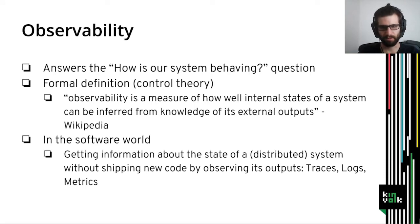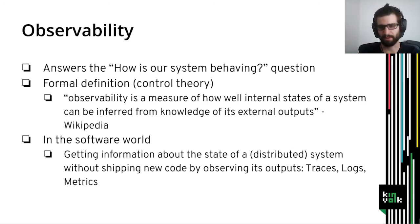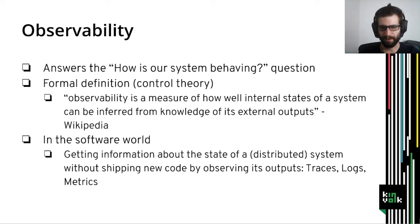This definition could be not that relevant for software. So we could say that for the software world, observability is about getting information about the state of the system without having to ship new code to the system, without changing the code of the system, by observing its outputs. There are traces, logs, and metrics. This information should allow us to infer how the system is behaving, if there is any problem or not.